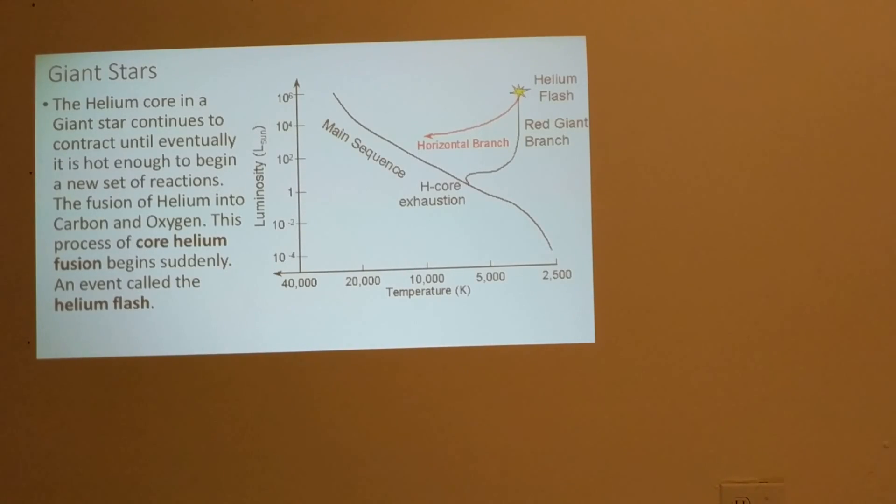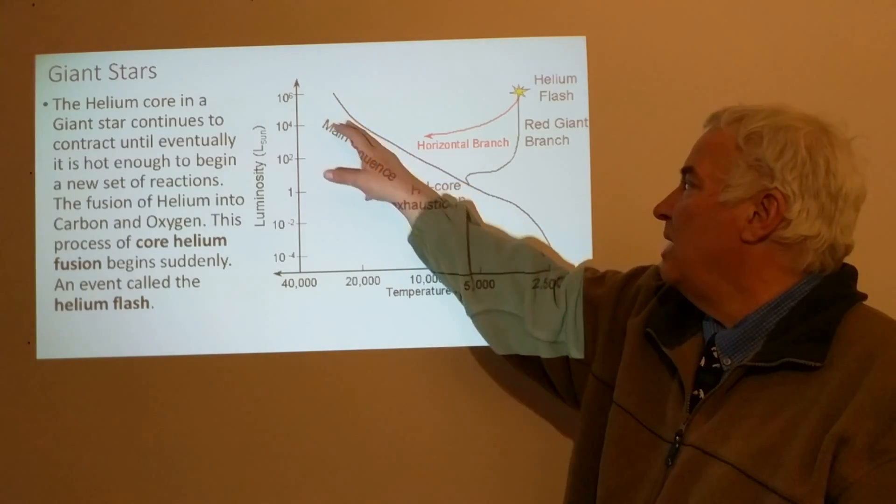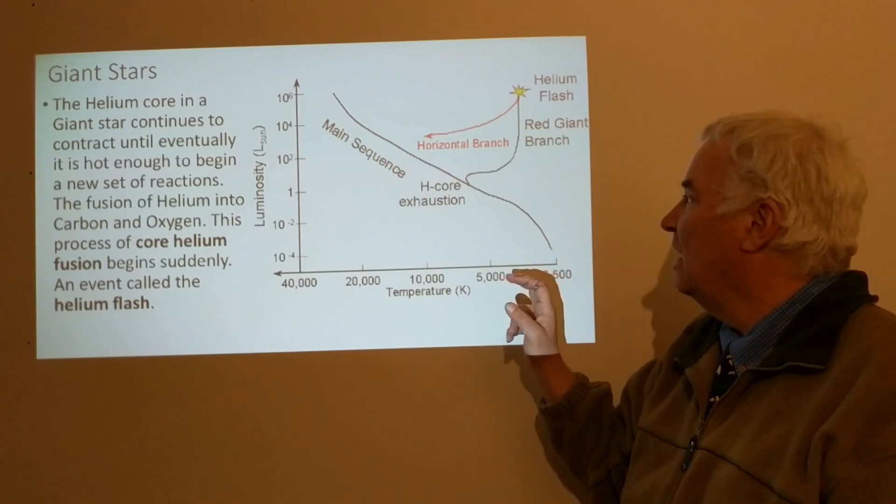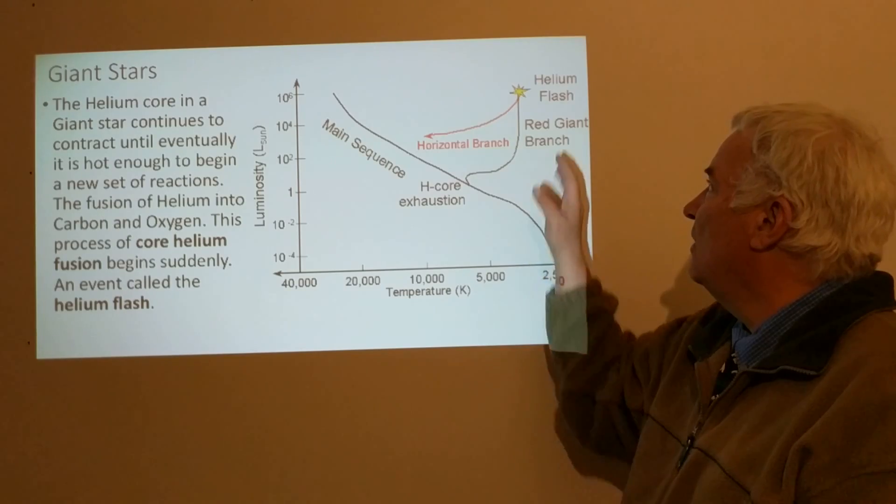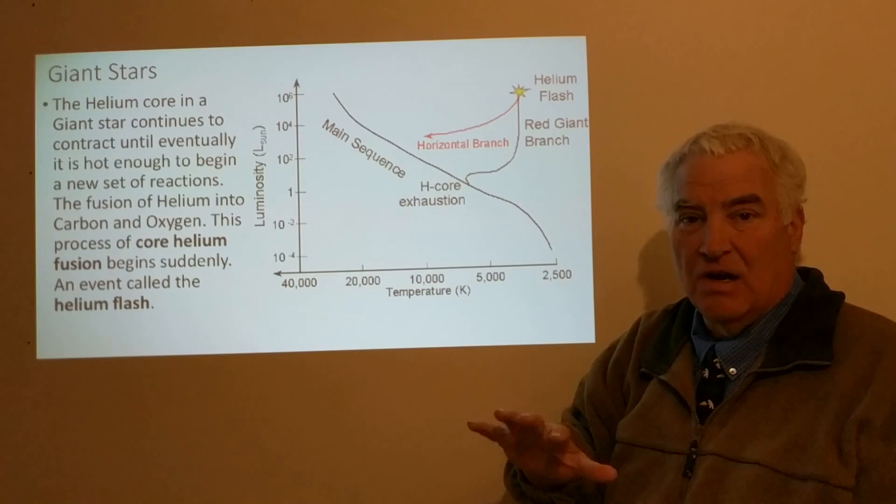The helium core in the giant star continues to contract until eventually it's hot enough to begin a new set of reactions: the fusion of helium into carbon and oxygen. This is the process of core helium fusion and it begins suddenly. This event is called the helium flash. We see the main sequence here on the HR diagram.